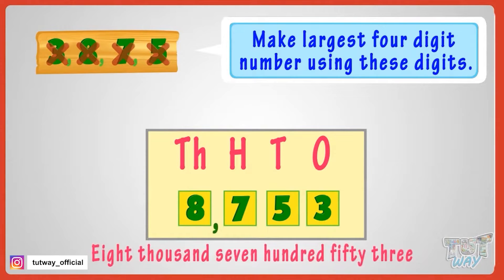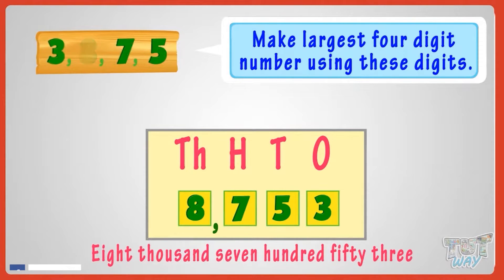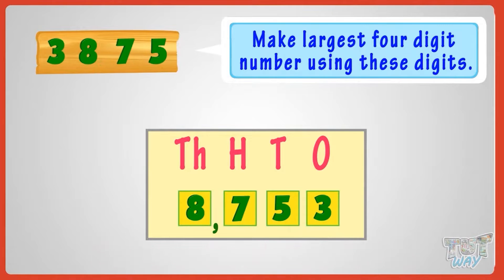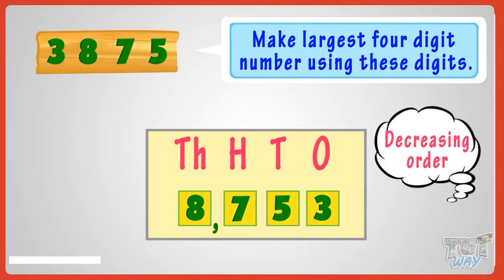So we have made the biggest number: eight thousand seven hundred and fifty-three — 8,753 — using the digits 3, 8, 7, and 5. Kids, you just need to always arrange the numbers in decreasing order if you want to make the biggest number from given numbers.